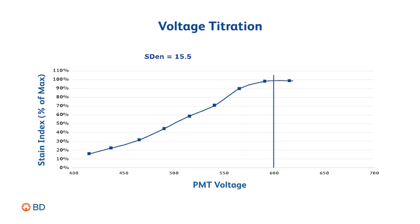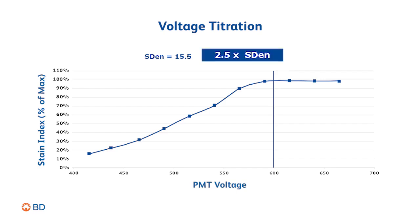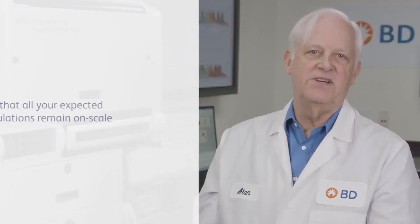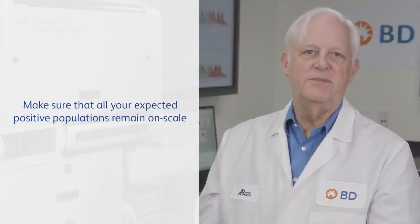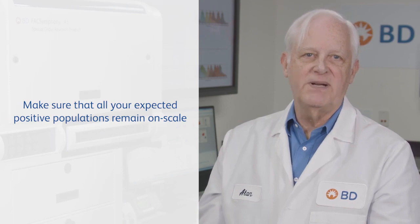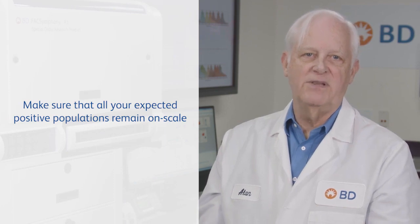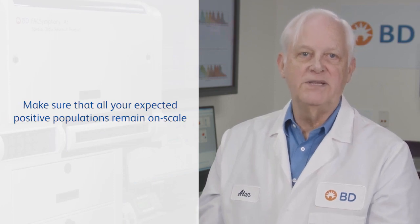In this example, the detector should be set to approximately 600 volts. At this voltage, the robust standard deviation of the negative cells is, as expected, two and a half times the electronic noise. When making these adjustments, always make sure that your expected positive populations remain on scale.